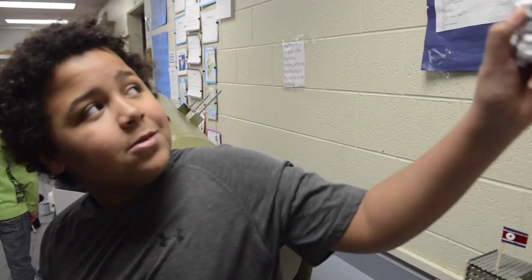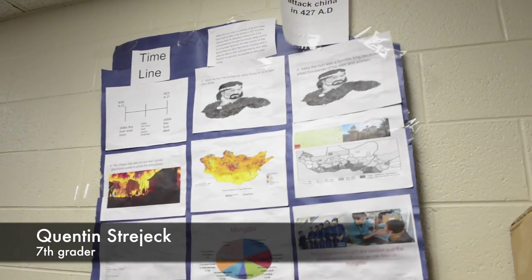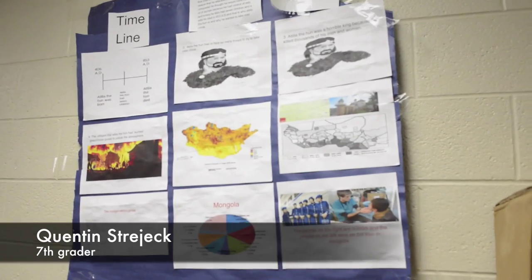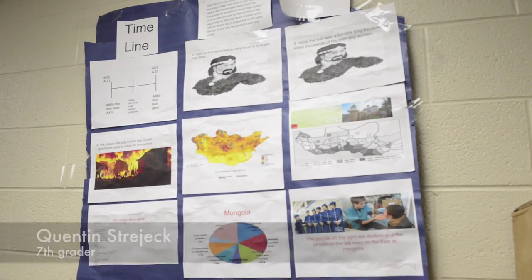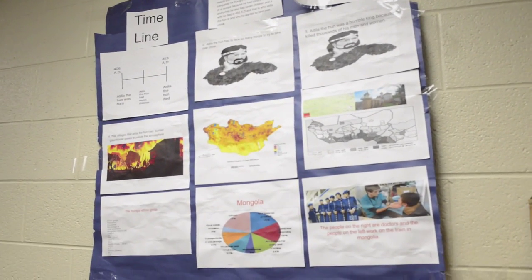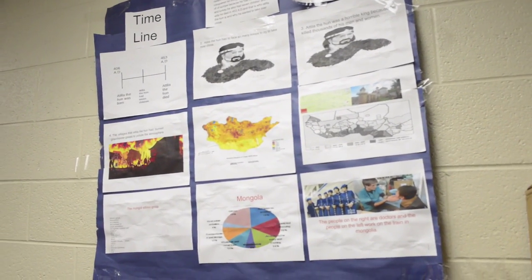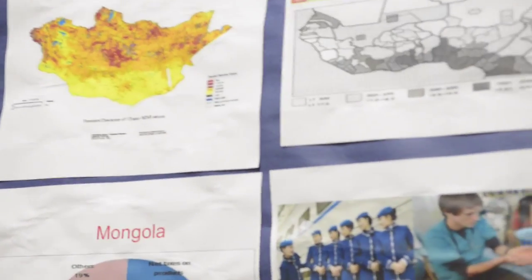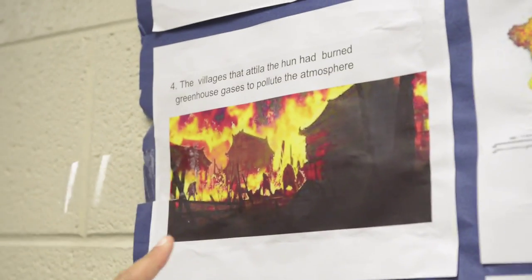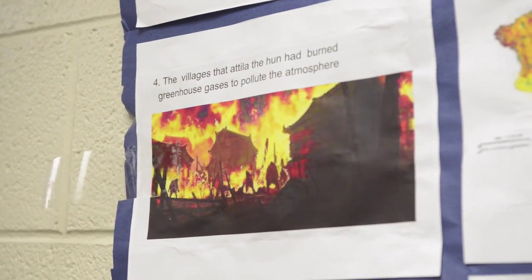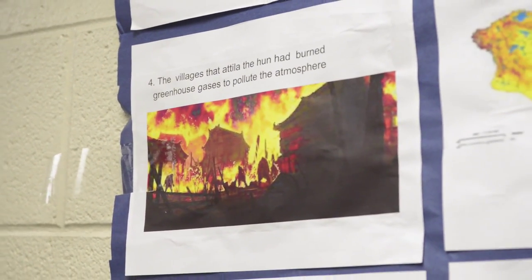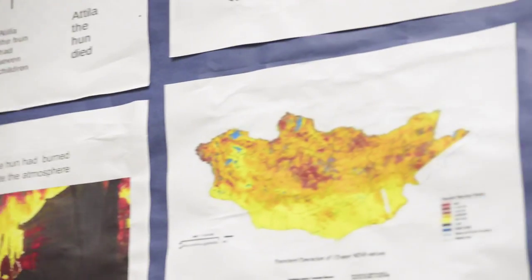This is a project about a tale of the Hun. He was a ruthless king and leader. This is a picture of some of the villages that he burned down — they let out pollution and greenhouse gases into the atmosphere.